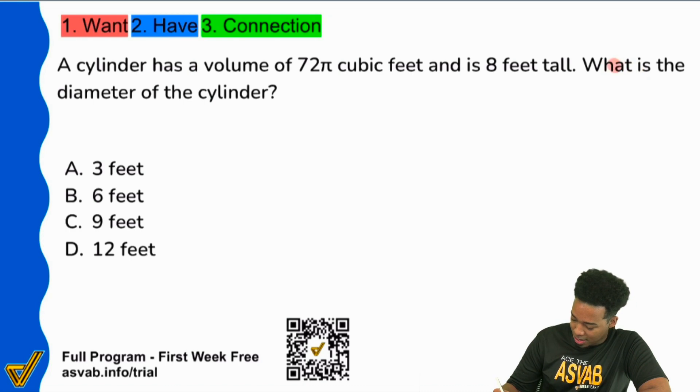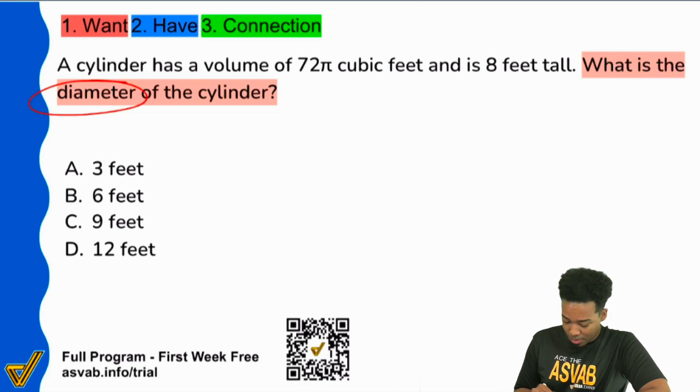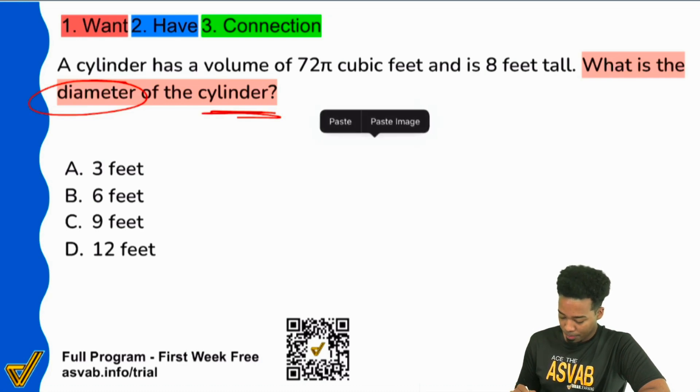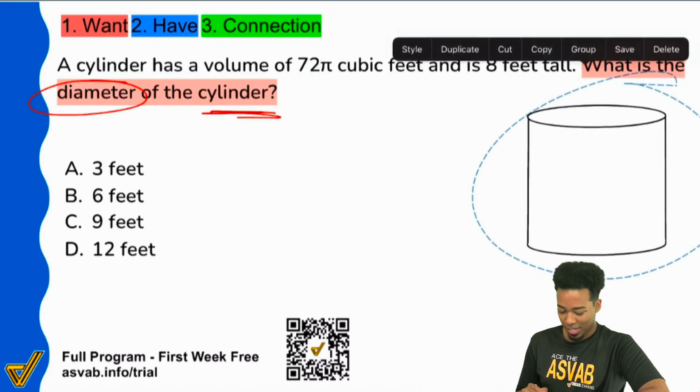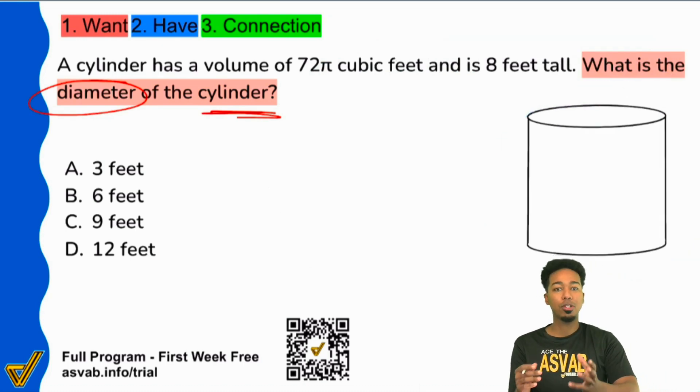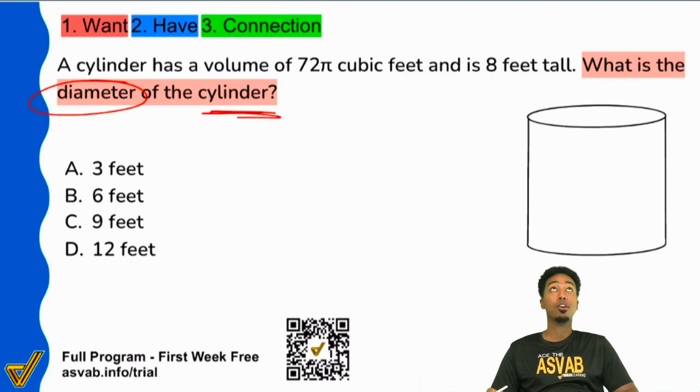What is the diameter of the cylinder? There are two main words that you really want to mark down. We want to find the diameter and we're dealing with a cylinder. For those of us that don't remember, here is what a cylinder looks like. A cylinder is pretty much just like a tube, circular, you have a circular base and then you just have a tube connecting it.